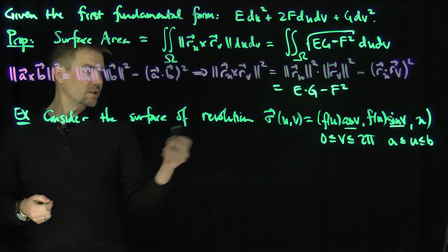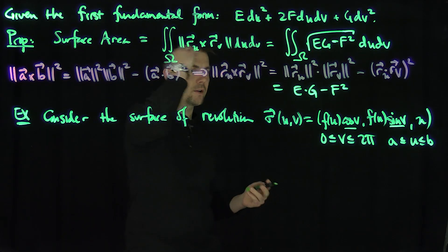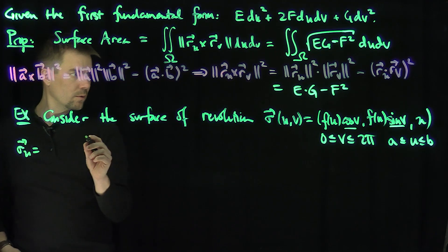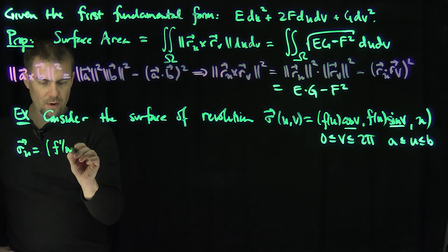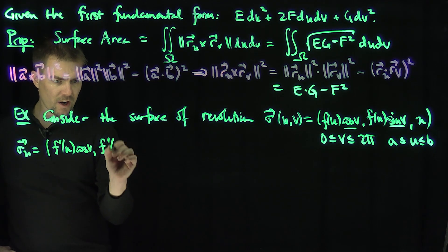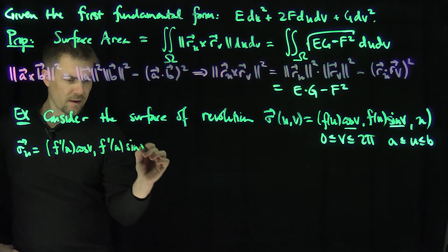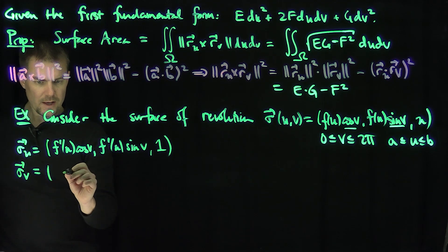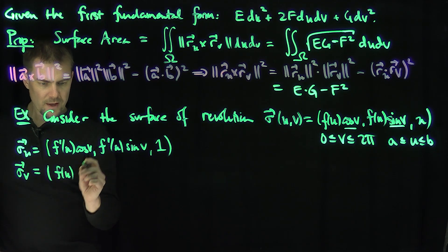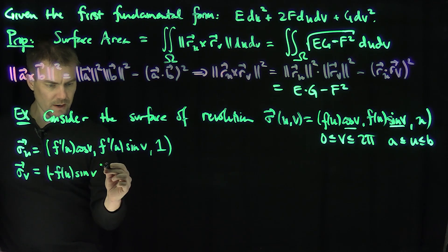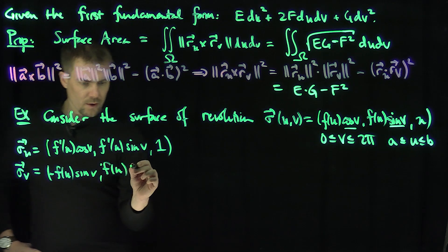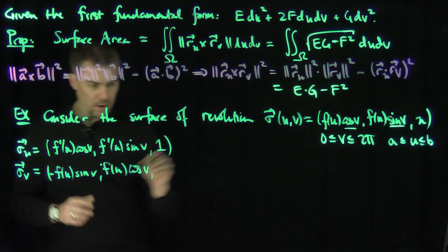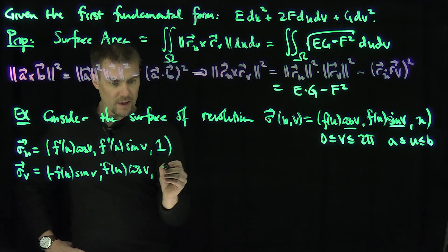Let's compute the first fundamental form of this surface. The partial derivative σ_u is (f′(u) cos v, f′(u) sin v, 1). The partial derivative σ_v is (−f(u) sin v, f(u) cos v, 0).